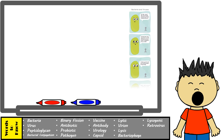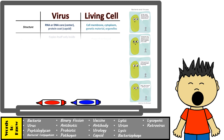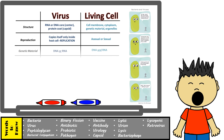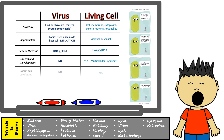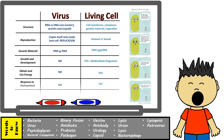Notice how viruses and living cells may seem to have some things in common, but for the most part they are very different. They both have nucleic acids, but viruses do not have cell parts such as cell membranes, cytoplasm, or organelles — they only have nucleic acids and protein coats. Viruses also cannot reproduce asexually or sexually; they can only replicate with the help of their hosts. Viruses cannot grow, obtain and use energy, or respond to the environment, which is why they are considered not living.